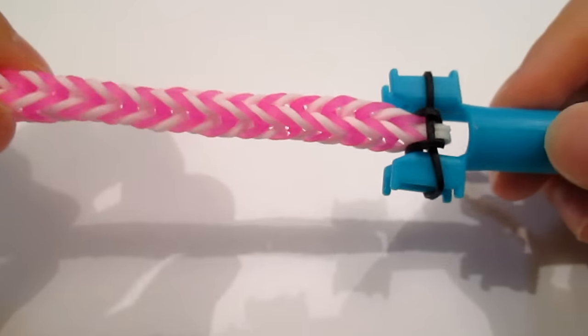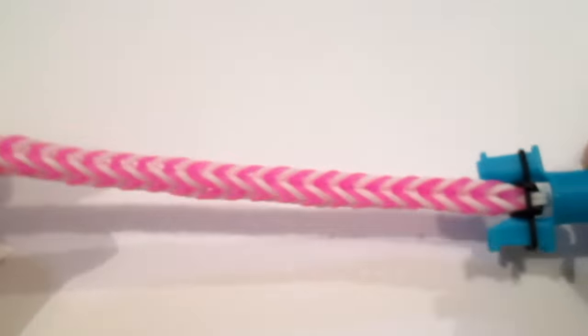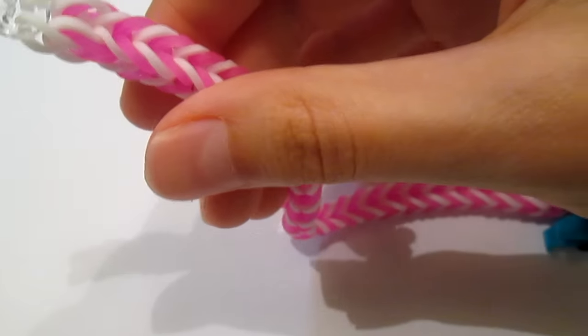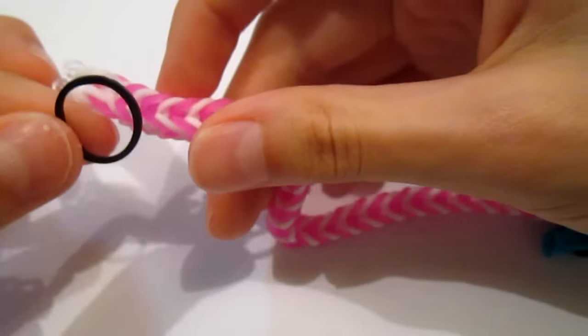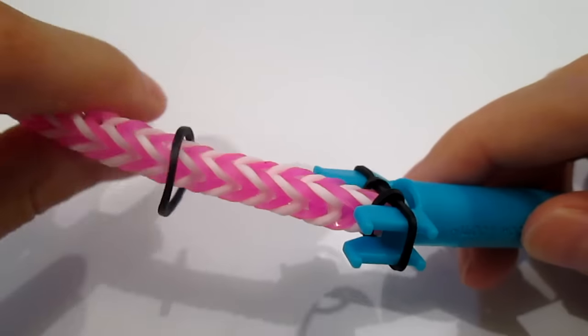Make sure that the fishtail in the middle doesn't get twisted up while you do the single. And then you do the same step basically for the whole bracelet. Take a black, string it onto this fishtail, all the way down.